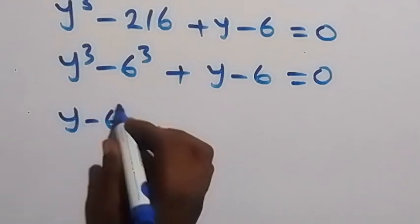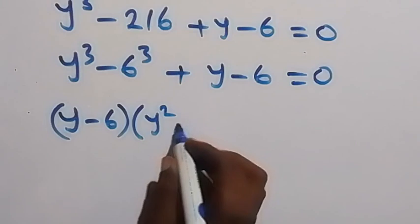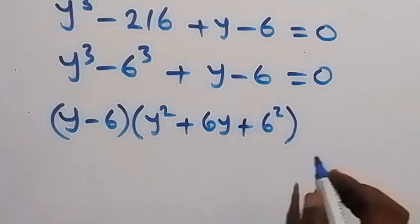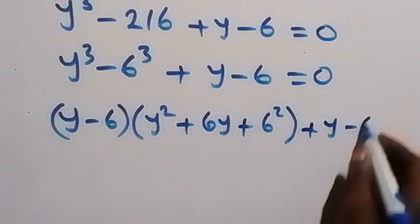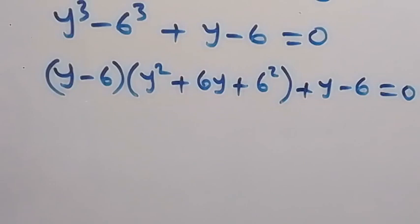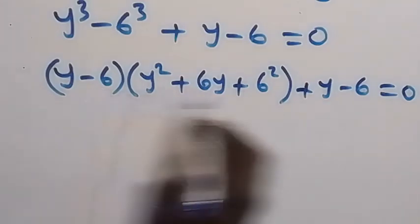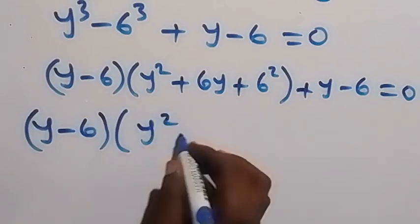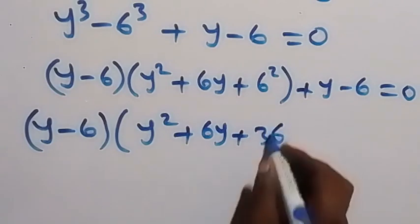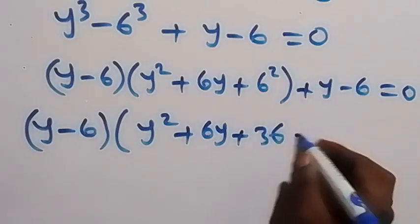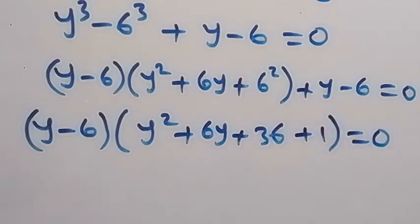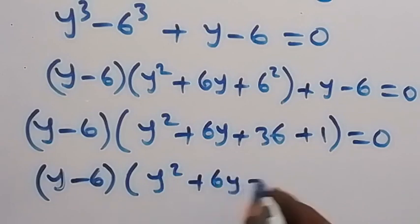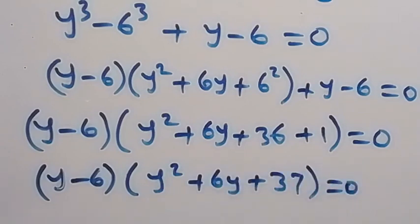Applying the difference of cubes: y minus 6, multiplied by y squared plus 6y plus 36, then plus y minus 6, equals zero. Factoring out the common term y minus 6, we get y minus 6, multiplied by y squared plus 6y plus 36 plus 1, which simplifies to y minus 6 multiplied by y squared plus 6y plus 37, equals zero.